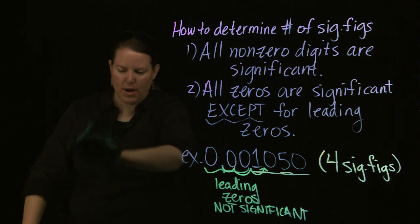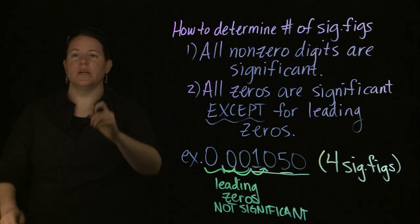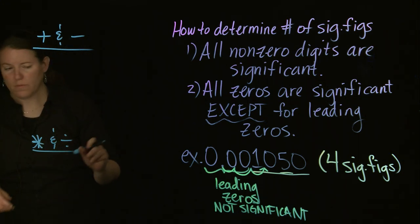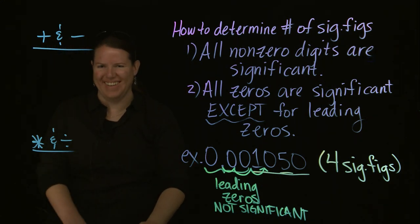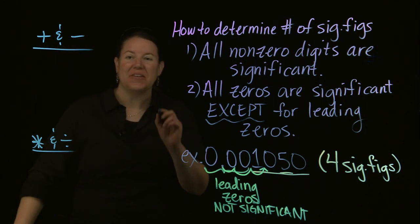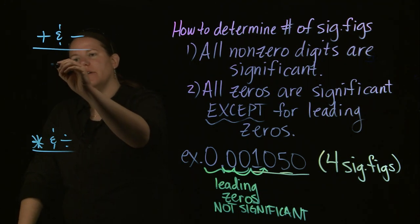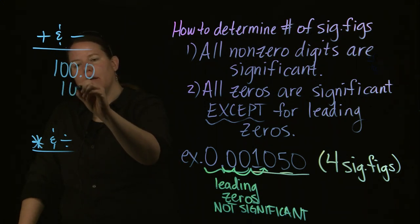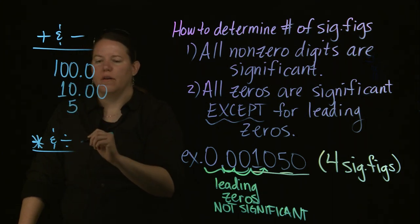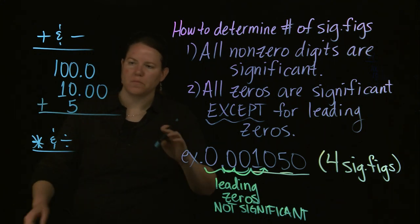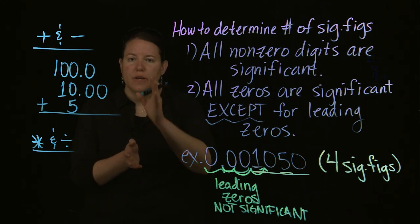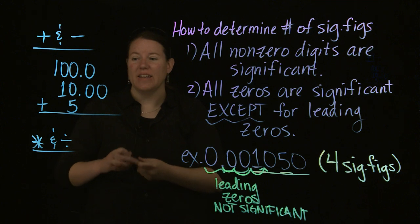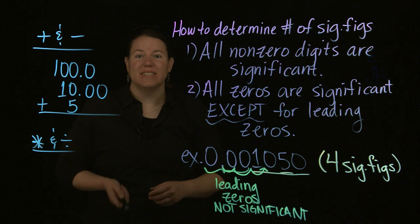Now let's talk about mathematical operations with sig figs. Mathematical operations include adding, subtracting, multiplying, and dividing. For addition and subtraction, let's say I have 100.0, 10.00, and 5, and I'm adding those together. When you do addition and subtraction, if you had to do it by hand you'd line up the decimal points — that means the decimal points are important. The final answer must reflect the most uncertain, or least accurate, measurement.